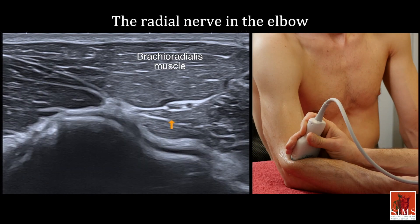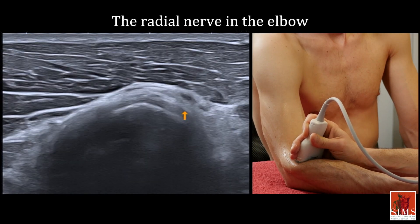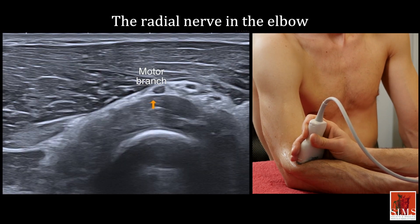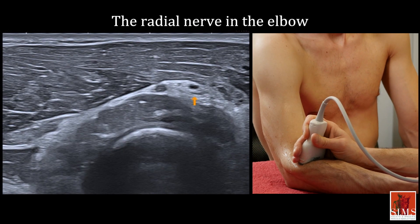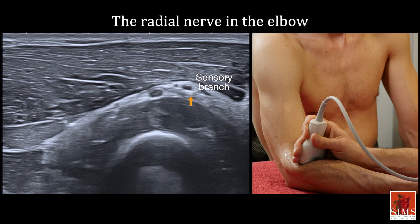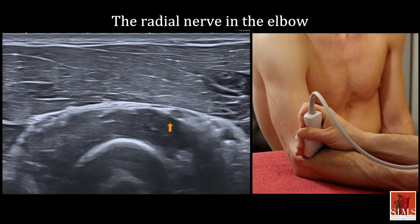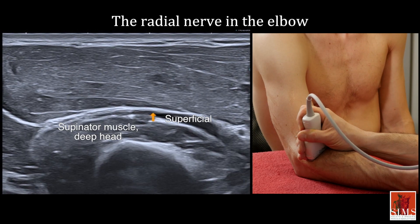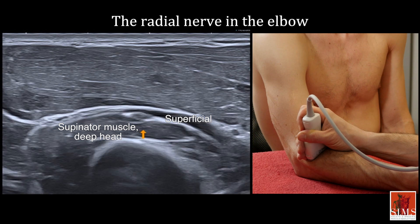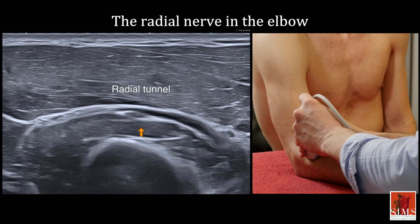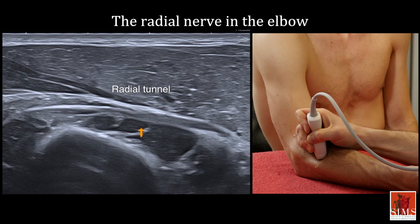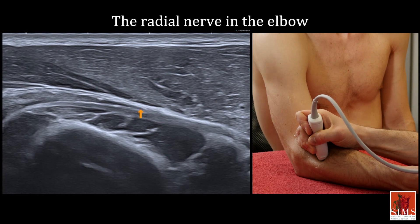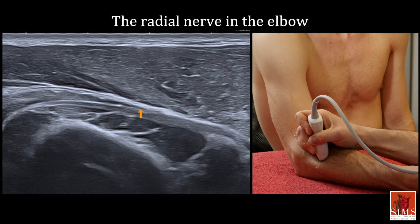At the anterolateral surface of the elbow, the radial nerve splits into two branches: one lateral, the deep motor branch of the radial nerve, and the other more medial, the superficial sensory branch. The deep branch of the radial nerve then goes around the radial neck, passing between the two heads of the supinator muscle — the superficial head and the deep head. This canal is called the radial tunnel. On the sagittal views, the radial nerve is easily seen plunging within the radial tunnel and passing under the free edge of the superficial head of the supinator.